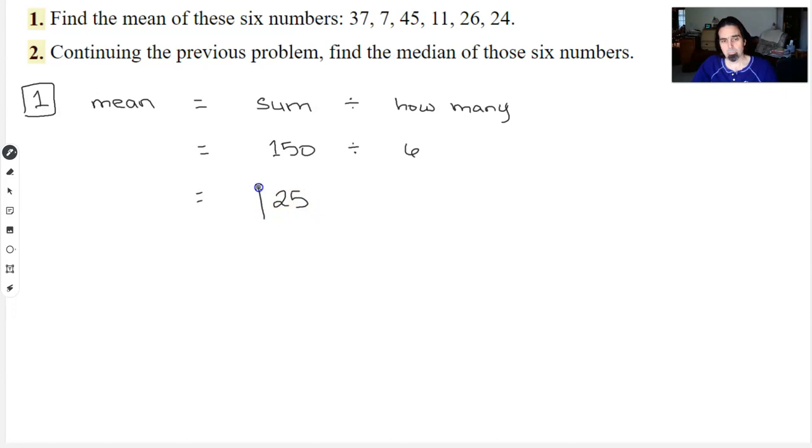For the second problem, median was the different kind of version of what is typical of a group. It ignores the highest and lowest extremes, thinking that those probably are biased and not representative of all of the numbers. To find the median you had to list things in order and pick the central one or central two. And if there's two in the middle then you have to take the mean of those.